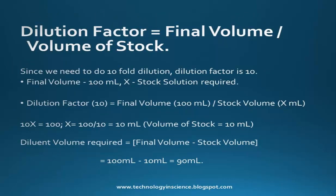The dilution factor equals final volume divided by volume of stock. For a 10-fold dilution, dilution factor is 10 and final volume is 100 ml. So 10x = 100, meaning x = 10 ml — that is the stock volume required. The diluent volume equals final volume minus stock volume: 100 ml minus 10 ml equals 90 ml. So to make a 10-fold dilution, add 10 ml of stock to 90 ml of diluent.